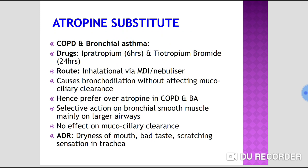For COPD and bronchial asthma, bromide salts ipratropium (6-hour duration) and tiotropium (24-hour duration) are used via inhalational route — metered-dose inhaler or nebulizer. They cause bronchodilation without affecting mucociliary clearance, so no mucous plug formation or airway obstruction occurs. Adverse effects include dryness of mouth, bad taste, and scratching sensation in the trachea.